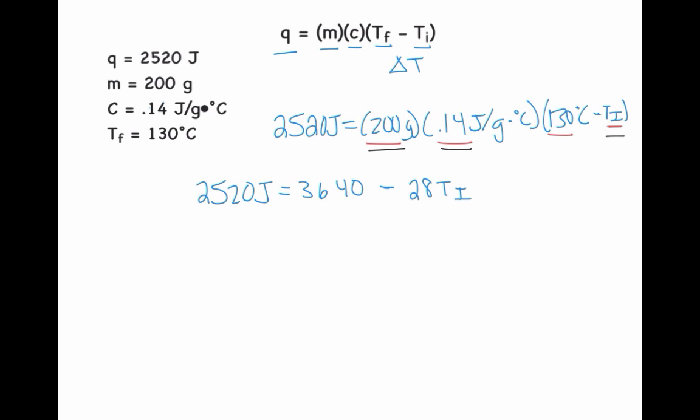The next step is going to be to move the 3,640 over to the other side. So minus 3,640 to both sides, minus 3,640 joules. And when I do that, and I take the difference of it, if I do my math correctly, I'll get negative 1,120 equals negative 28 temperature initial.